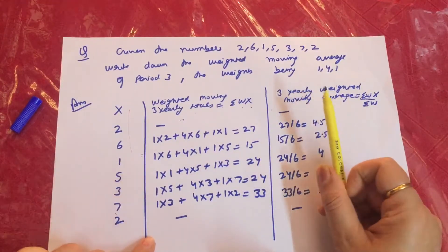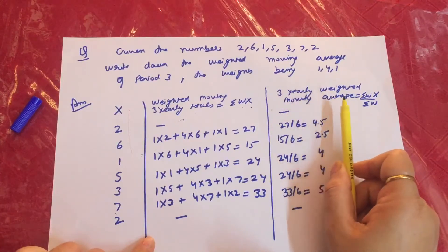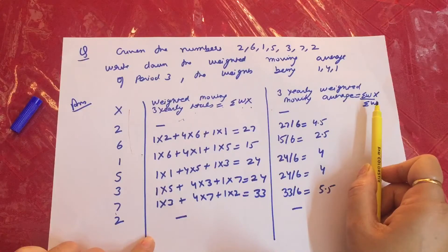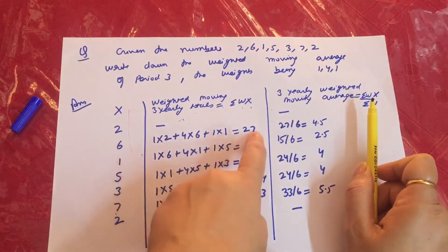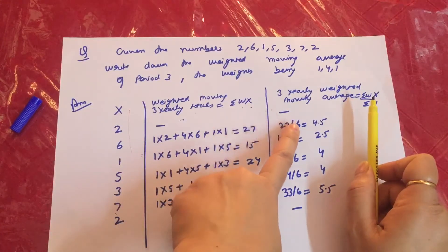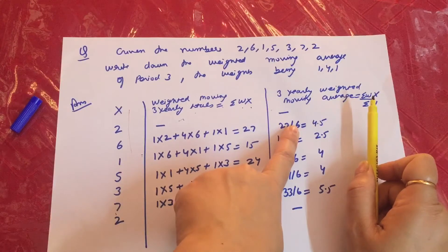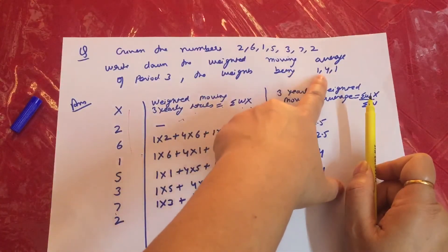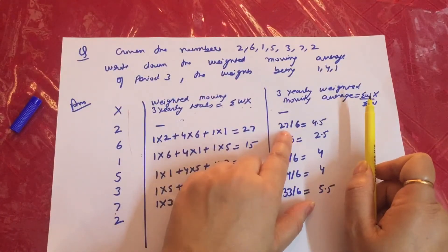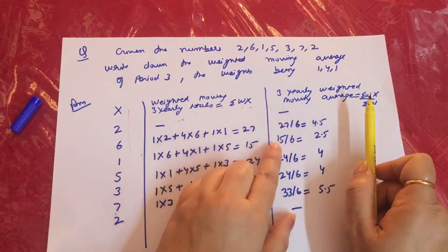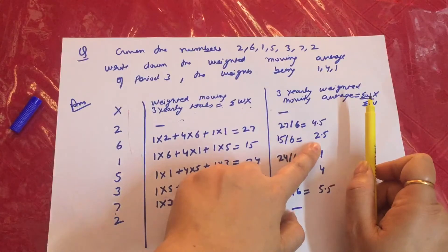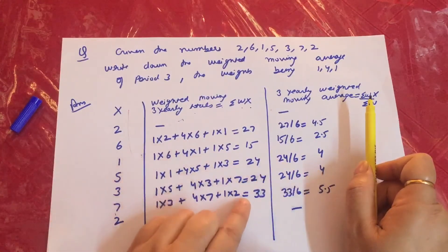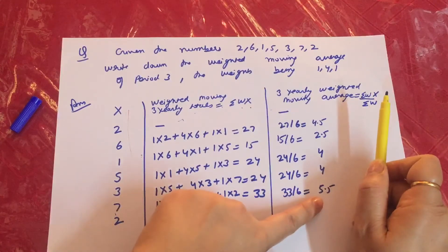The next column is the 3-yearly weighted moving average. We need to calculate summation WX divided by summation W. The total of weights is 1 plus 4 plus 1 equals 6. So: 27 divided by 6 is 4.5; 15 divided by 6 is 2.5; 24 divided by 6 is 4; 33 divided by 6 is 5.5.